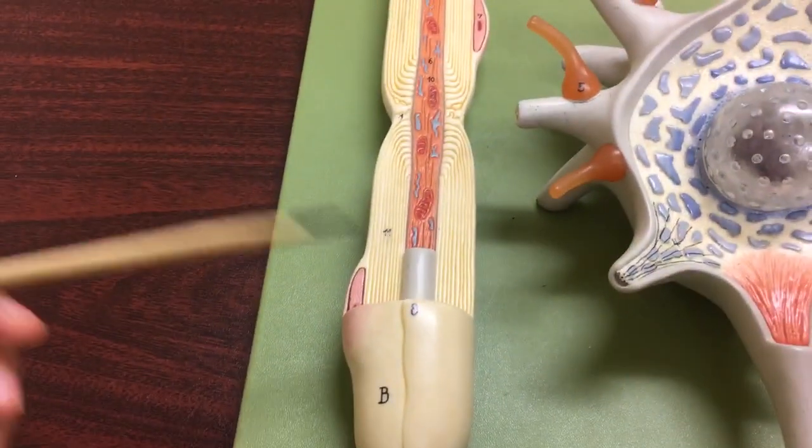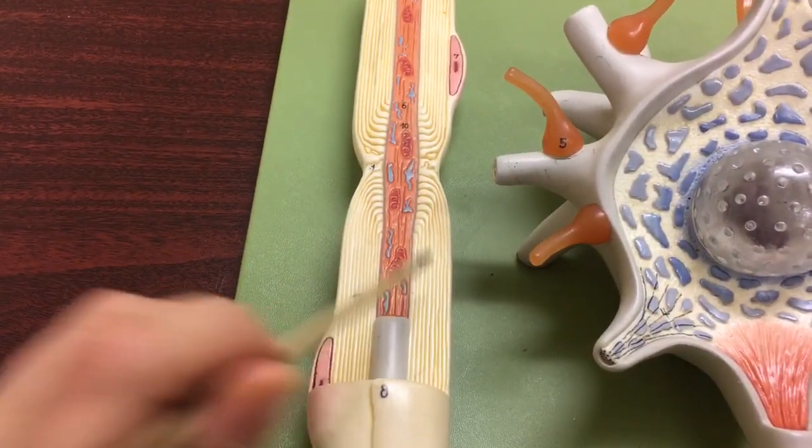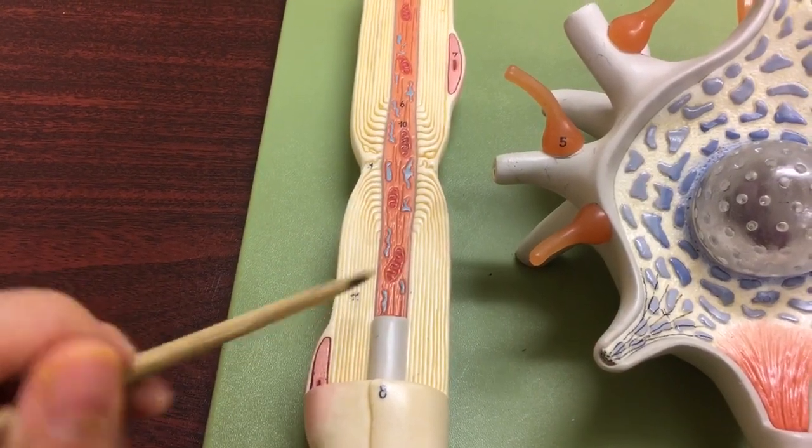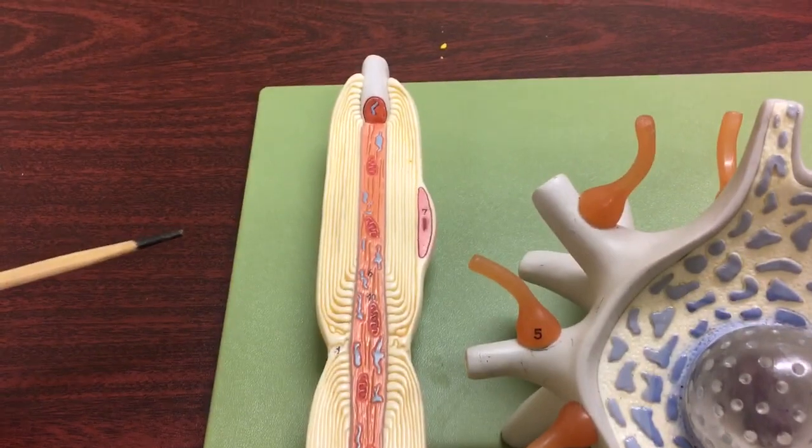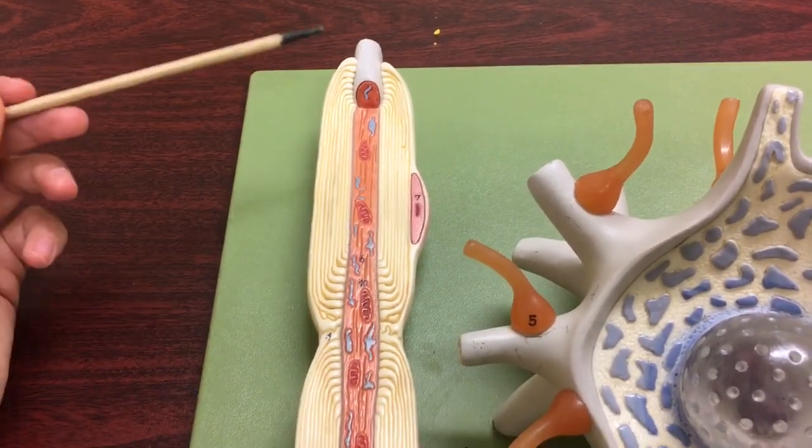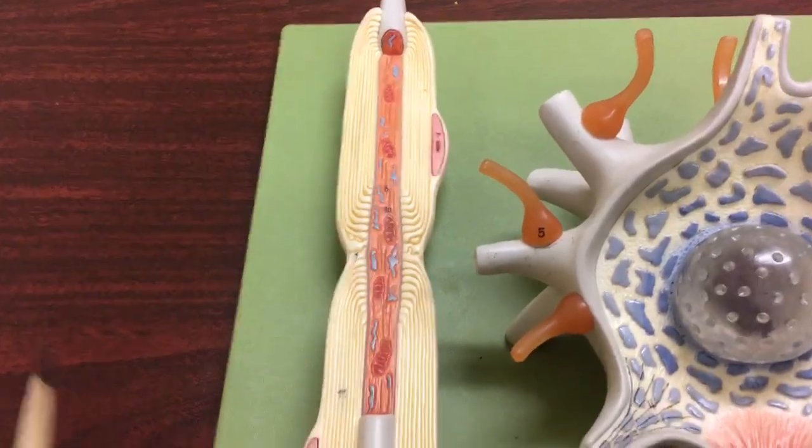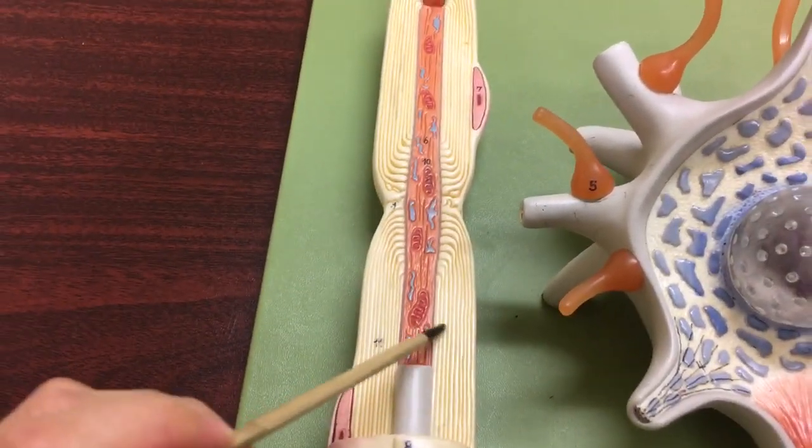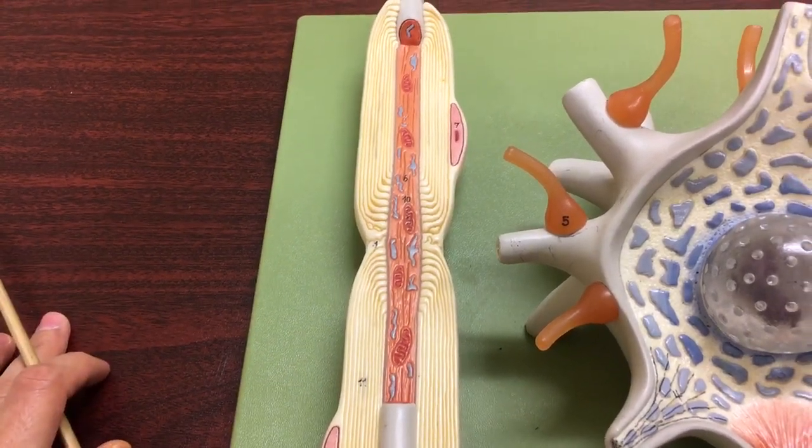Now the axon is going to be wrapped with myelin sheaths. Remember this is what allows action potentials to travel fast and really jump on the neurons. Without these myelin sheaths, communication or the traveling of action potentials would be much slower.